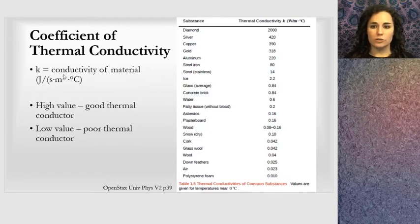A diamond, I can see, conducts heat very well, whereas air or polystyrene foam has a very low coefficient and conducts heat poorly. These are good insulators, these are good conductors. This chart I found in OpenStax University Physics, Volume 2.